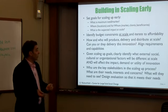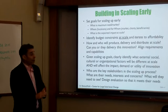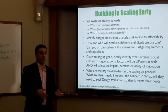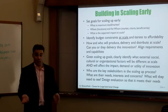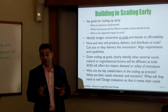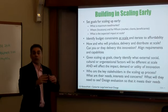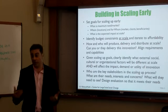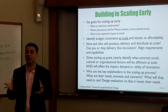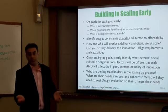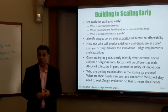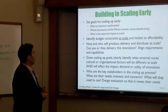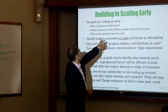So, set goals for scaling up early. What is the maximum need or market? If it works, what is the maximum scale? Is it only rural poor women of reproductive age who need it? What does the scale look like in terms of beneficiaries and location? If it's a social enterprise model, what's the market and how big is it?